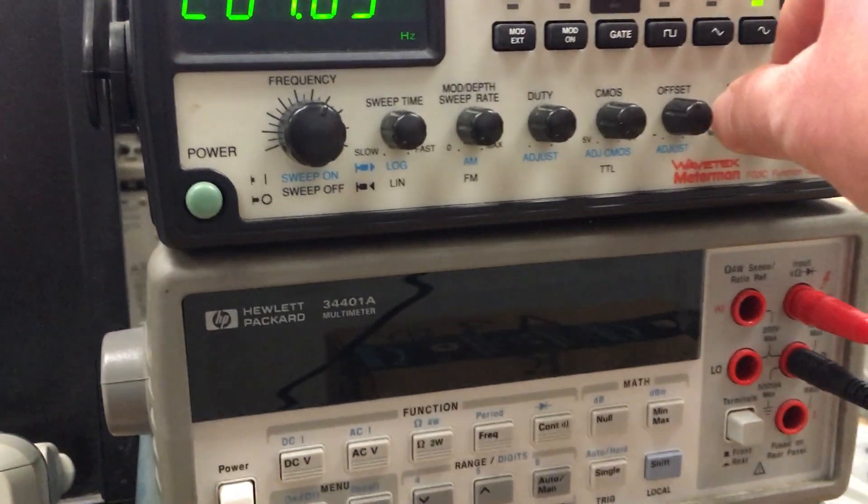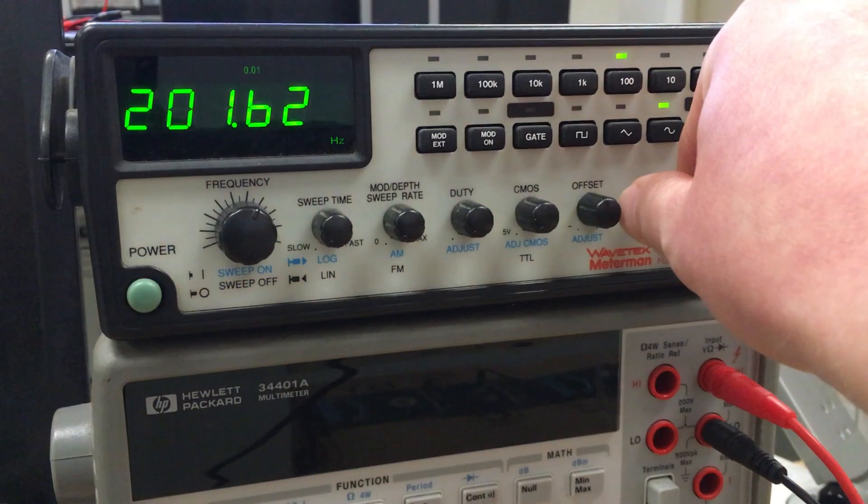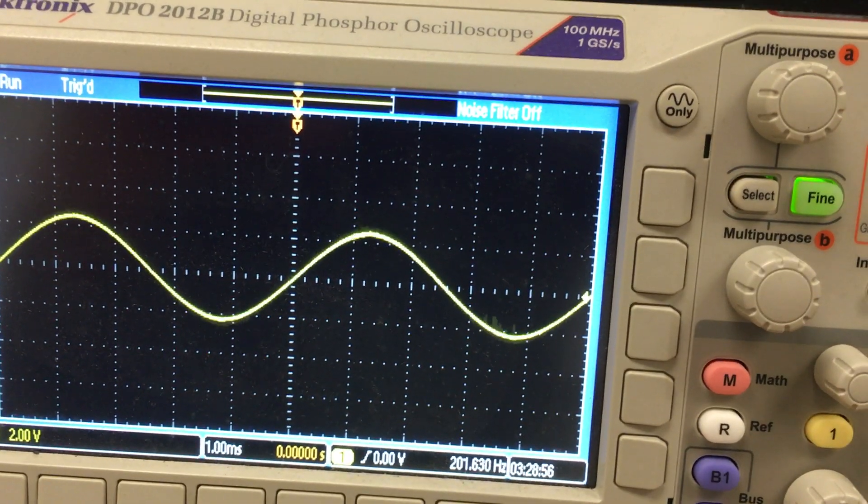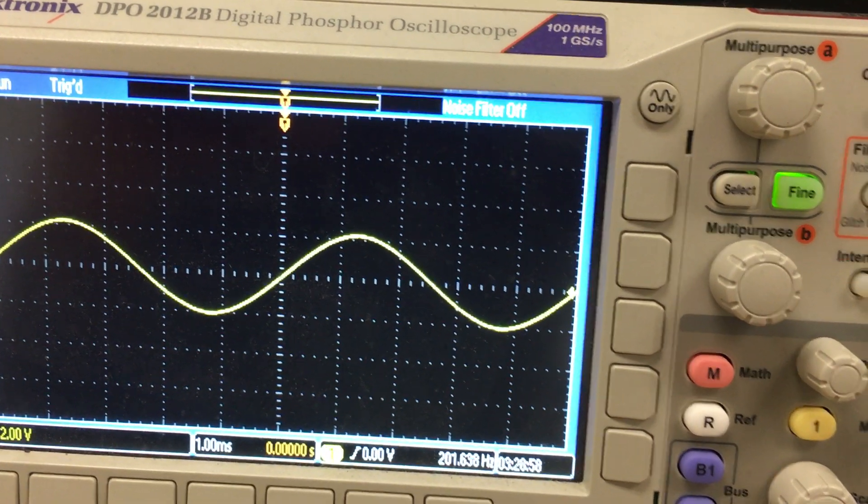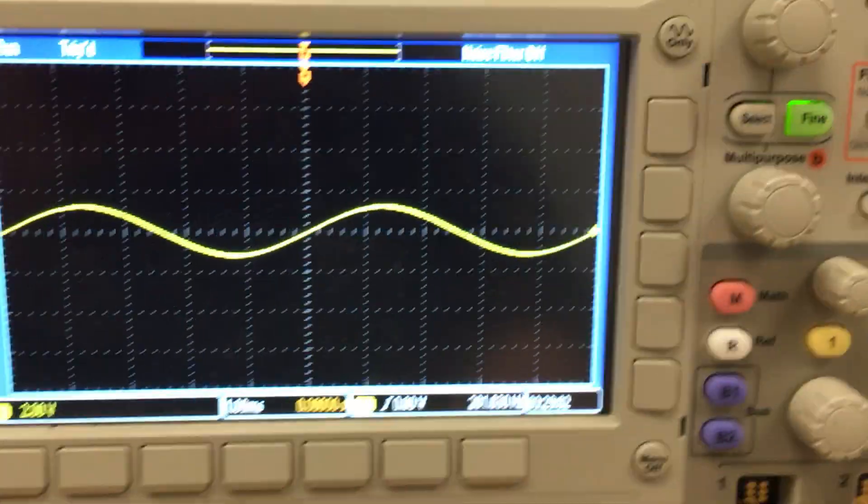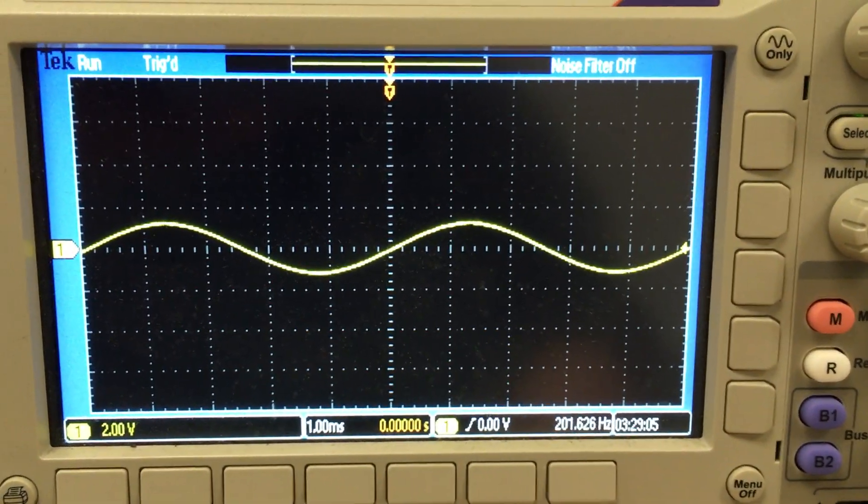All right. Well, the oscilloscope can't help us there. We have to come over here, and we have to adjust the amplitude. So let's bring the amplitude down, bring the amplitude down, bring the amplitude down. Now we're about 4 volts tall, and we'll get it close.